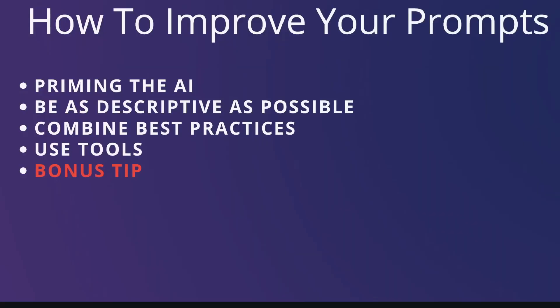My fifth and bonus tip: you don't need to overly optimize your prompts. As we saw in today's video, you can get very deep and detailed in your prompting, but in my experience you don't need to go as deep as some of these prompts show, because these AI language models are very smart. Find the sweet spot — be as descriptive as you can, give context, prime the AI, and combine best practices — but you don't need a six or seven line prompt just to get a blog post title. It's about experimenting and finding what works for you.